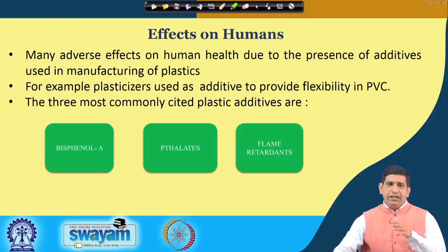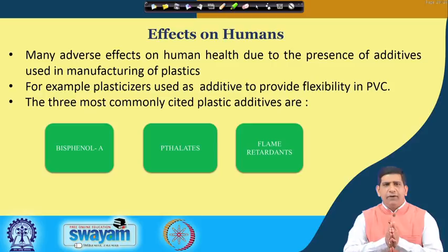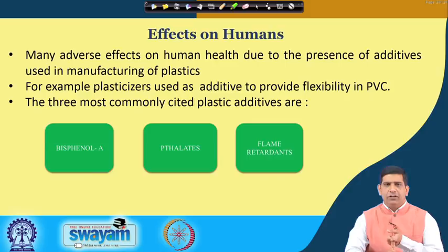There are a lot of additives used in the manufacturing of plastics — plasticizers, for example, which provide flexibility to PVC. The three most commonly cited plastic additives are bisphenol A, which is BPA — many times you see plastic containers labeled as BPA free. We will talk about BPA and I will show you a small video on a health impact related to BPA that has been reported. Then phthalates — the 'p' is silent — and flame retardants.